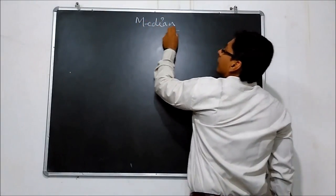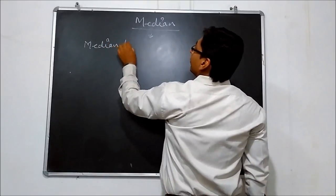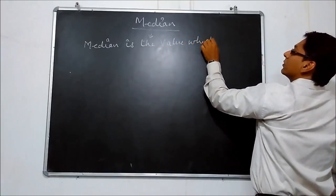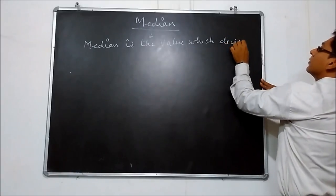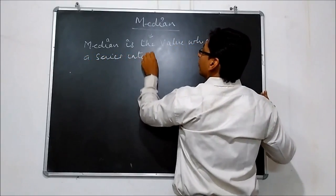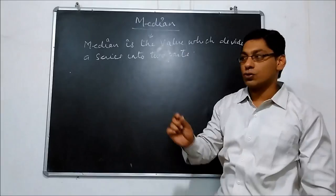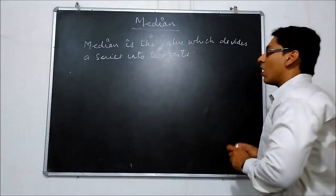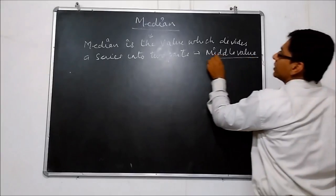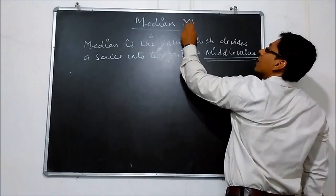First, Median. Median is the value which divides a series into two equal parts. We can say it is the middle value of a series. The middle value of a series is known as median, and median is denoted by M.